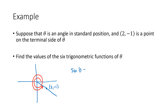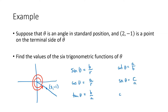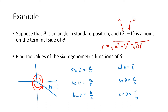The sine of theta is b over r, cosine of theta is a over r, tangent of theta is b over a, cotangent is a over b, secant is r over a, and cosecant is r over b. Here a and b are the coordinates of the point, so a = 2 and b = −1. Then r is the square root of a squared plus b squared — that's the square root of 2 squared plus (−1) squared, which equals the square root of 5.